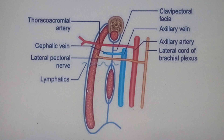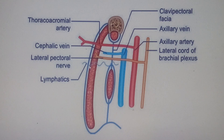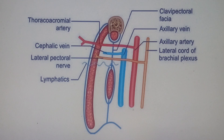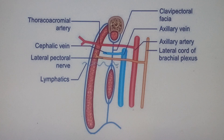Finally, there is a lymphatic taking a tortuous course here. This lymphatic is heading to the apical group of lymph nodes. It has to pierce the clavipectoral fascia and come inside, going up to the apical group of lymph nodes to drain there. That is the fourth structure piercing the clavipectoral fascia.